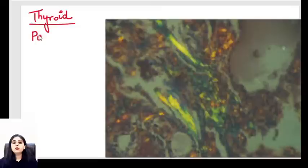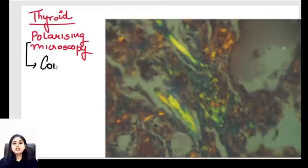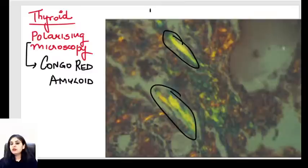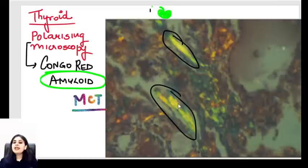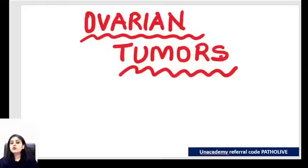A very important point: follicular carcinoma thyroid cannot be diagnosed on FNAC — neither the capsule nor the blood vessel can be seen on FNAC. If polarizing microscopy is shown with thyroid, think of medullary carcinoma thyroid, which shows amyloid. Congo red stain for amyloid under polarizing microscopy shows the famous apple green birefringence. Medullary carcinoma thyroid is the thyroid cancer that shows amyloid with apple green birefringence.